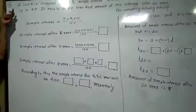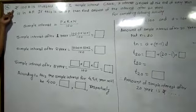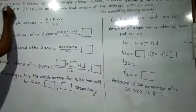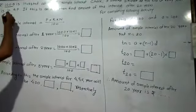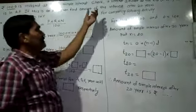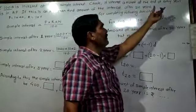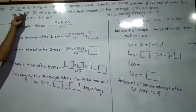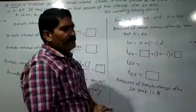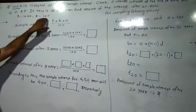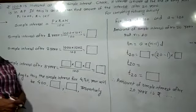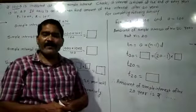We have to start with Problem Set 3, question number 14 — the last question of this problem set. Rupees 1000 is invested at 10% simple interest, so 1000 is the principal and rate of interest is 10%. We have to check if the interest amount at the end of every year is in AP. If it is an AP, then find the amount of interest after 20 years.